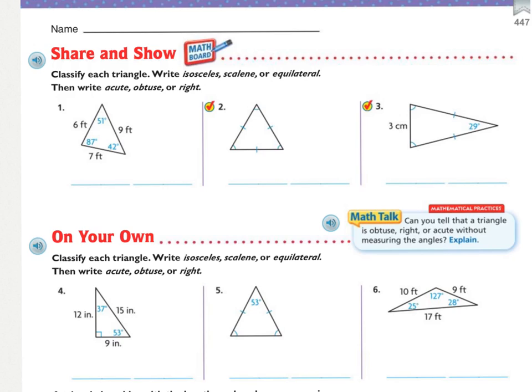Number one gives us all the measures. Looking at the sides: six feet, seven feet, and nine feet — none of them are the same, they're all different. The triangle looks like it's leaning to one side, so that is a scalene triangle. Looking at the angles: 51 degrees, 42 degrees, and 87 degrees — all less than 90 degrees and all look kind of squished. So those are all three acute angles, making it an acute triangle.